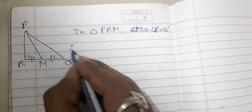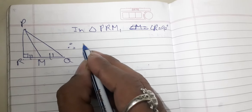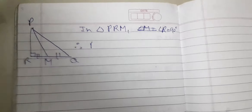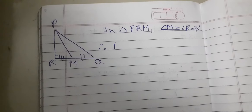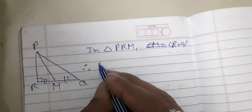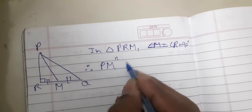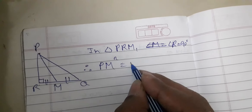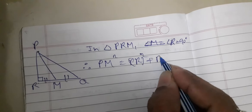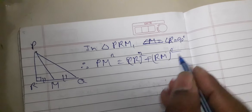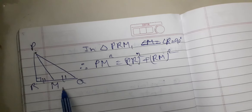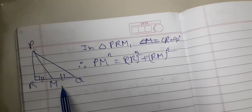Therefore, by Pythagoras theorem in triangle PRM, PM square is equal to PR square plus RM square.